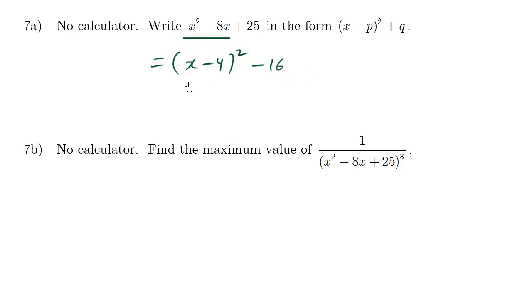So this part here is equivalent to this part here. Of course, we still have the plus 25. So we'll write it this way. And 25 minus 16 equals 9. So we have x minus 4 squared plus 9.